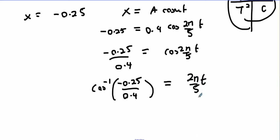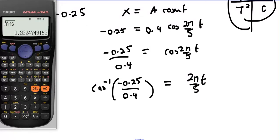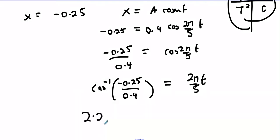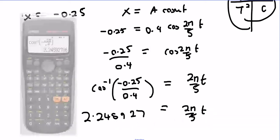So shift, cos inverse, minus 0.25 divided by 0.4. It's in radians so I'm good to go. I'm getting 2.245927.